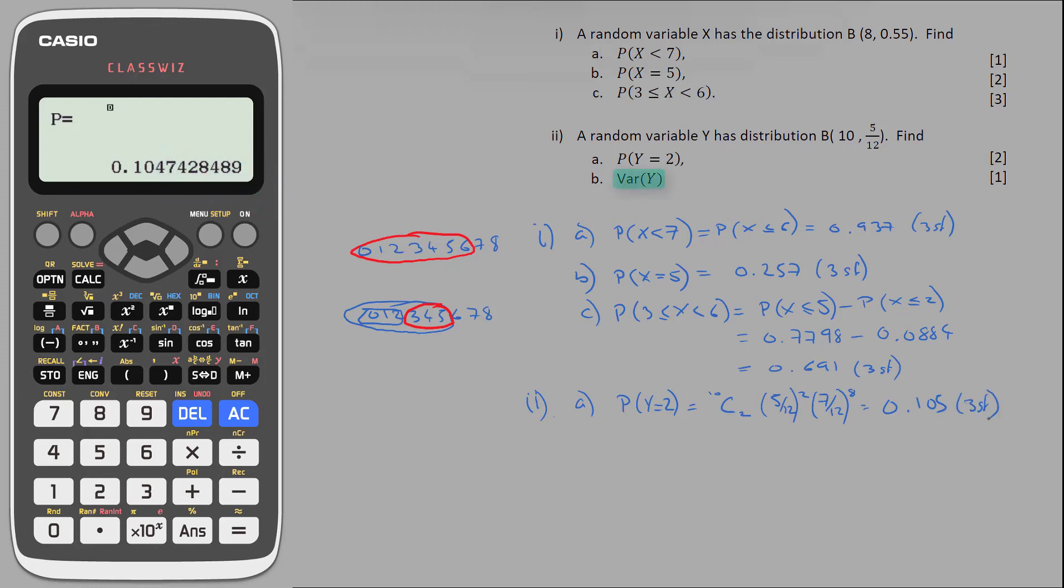Variance of a random variable following a binomial distribution is given by npq. The calculator won't do this for us strangely, so we're going to have to type it in ourselves. Switch into calculate mode by pressing menu followed by 1. The variance of y here is npq, so 10 times 5 twelfths times 7 twelfths, which is equal to 175 over 72.